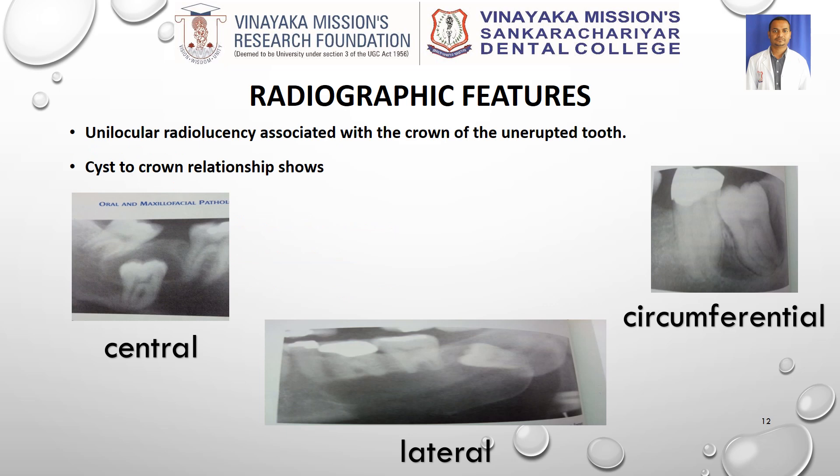Radiographic features: the dentigerous cyst is almost always unilocular; when large it may appear multilocular, associated with the crown of an unerupted tooth. Based on radiographic appearance, three varieties exist: central — the impacted tooth is projected inside the cyst; lateral — associated with mesioangular impacted tooth, with radiolucency covering one side of the crown and lateral border; and circumferential — the entire crown and root along its length is involved.